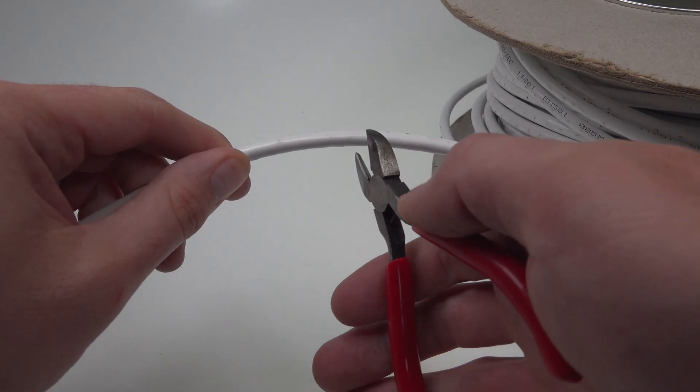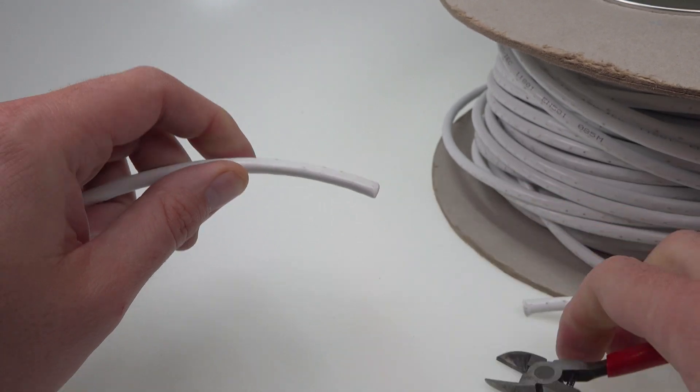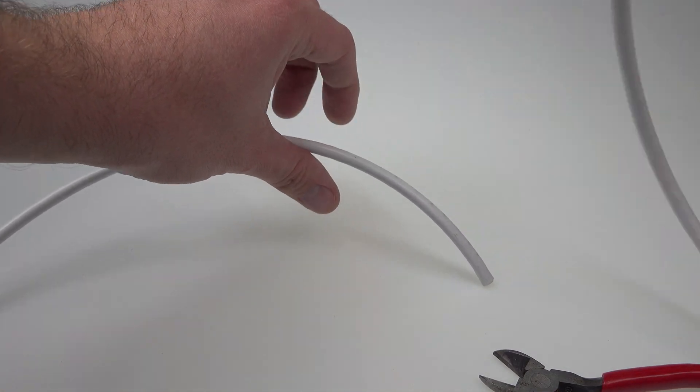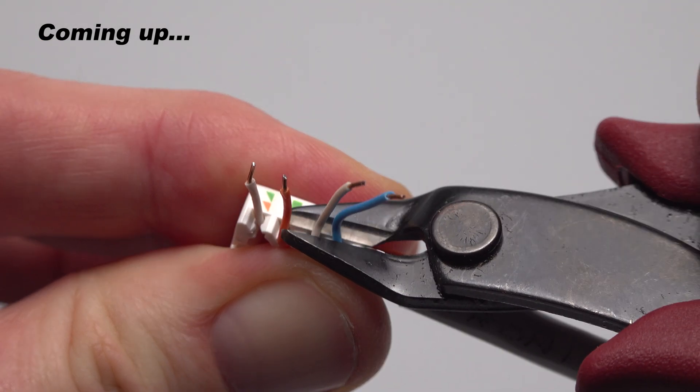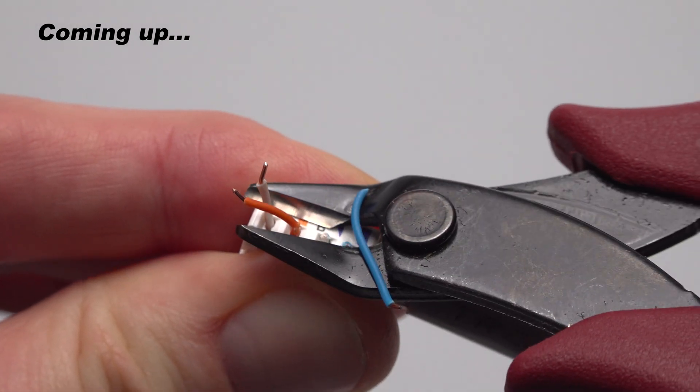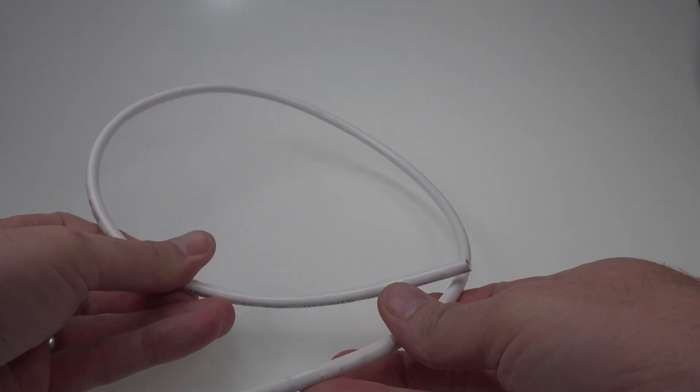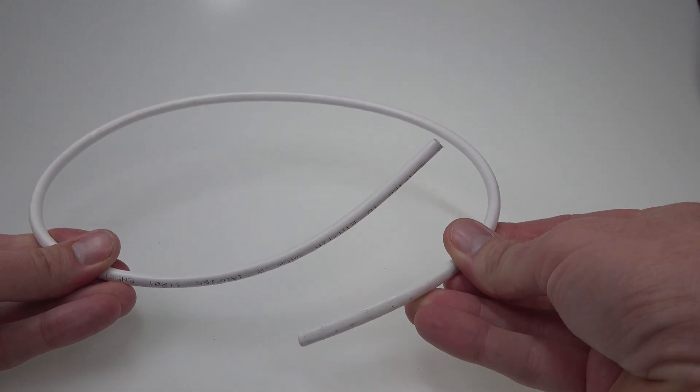Start by taking your wire cutters and cut however much cable you need for the cable run you'll be working on. Be sure to leave a generous amount of excess because a couple of centimeters will get chopped from either end and also because it's always better to have a little bit too much rather than end up with a cable run that's just a tiny bit too short.